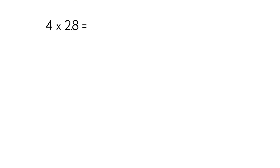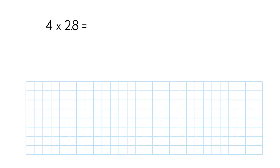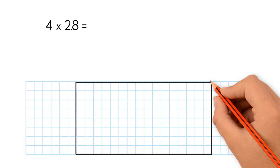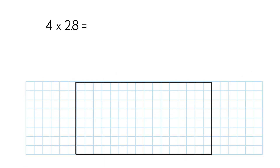Now let's go back to decimals. The numbers are similar, but instead of 28, we have 2.8. What should we do? We'll do the same thing. First, let's draw the area model. It is a rectangle with sides of 4 and 2.8. We label the sides — one side is 4 and the other side is 2.8.